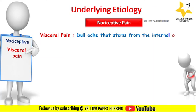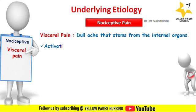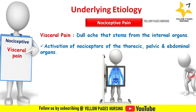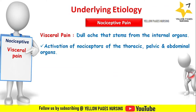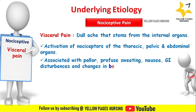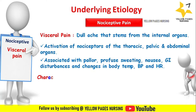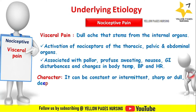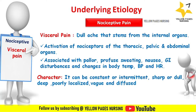Visceral pain is a dull ache that stems from the internal organs. It results from the activation of nociceptors of the thoracic, pelvic, or abdominal viscera, and is often associated with autonomic phenomena including pallor, profuse sweating, nausea, GI disturbances, and changes in body temperature, blood pressure, and heart rate. It can be constant or intermittent, sharp or dull, deep, poorly localized, vague, and diffuse.